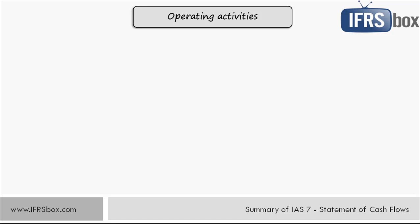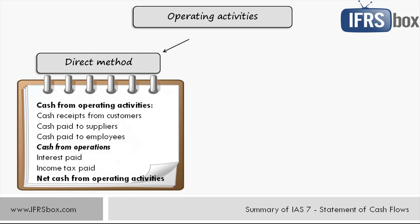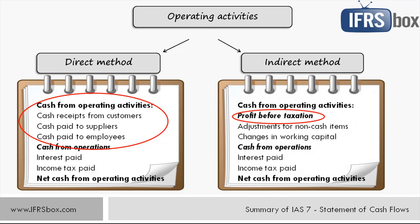There are two ways of reporting cash flows from operating activities. Under the direct method, major classes of gross cash receipts and gross cash payments are disclosed. Under the indirect method, you start with profit or loss before income tax and adjust it for non-cash items such as depreciation, deferrals, accruals of past or future cash flows, and any items associated with investing and financing activities.